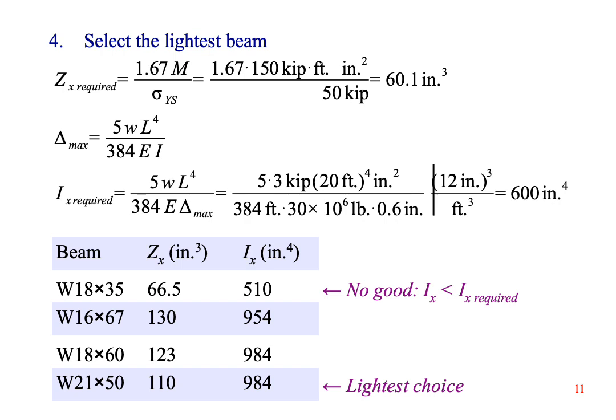Looking at the beams in Appendix D, we see that the W18 by 35 beam that we used before is no good. Its moment of inertia is less than what we need. Scanning other beams in the table, we find that the lightest beam that meets both the Z and I constraints is a W21 by 50 beam. It weighs 50 pounds per foot.